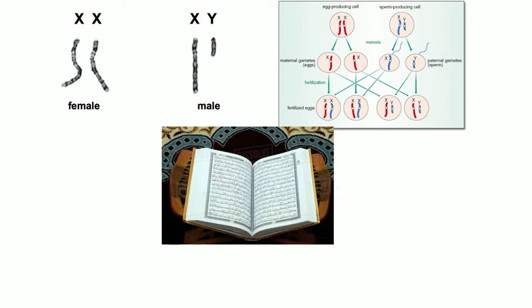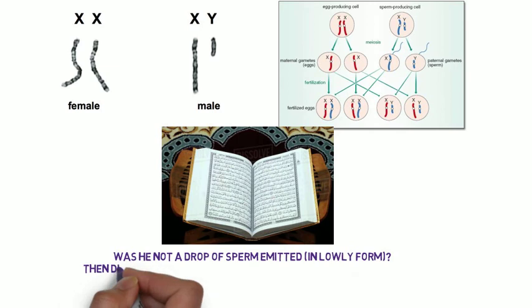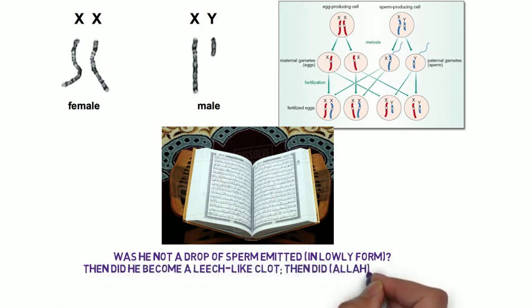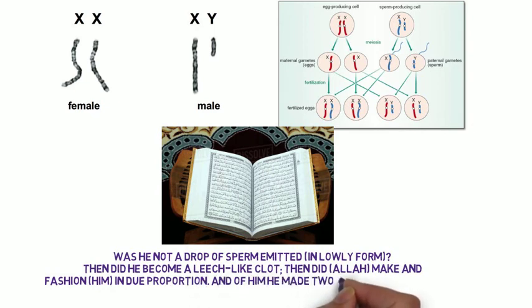Chapter 75, verses 37-39: Was he not a drop of sperm emitted in lowly form? Then did he become a leech-like clot, then did Allah make and fashion him in due proportion. And of him he made two sexes, male and female.